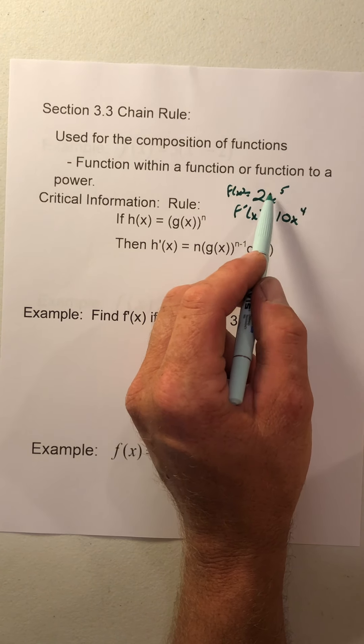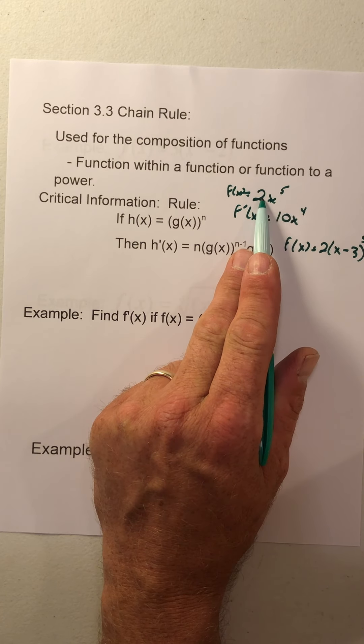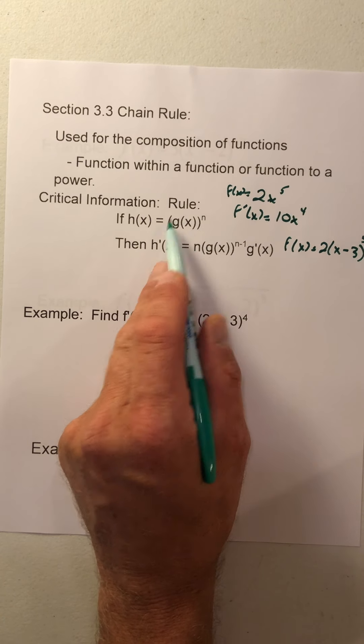Today we're looking at basic chain rule in which we have a function to an exponent. There are lots of different forms for the chain rule. Basically all of them are going to deal with something about a function. So if h(x) is a function to an exponent, we're going to find the derivative by taking the exponent and multiply it to the front just like we did in the power rule. So we multiply the exponent to the front. We bring the exponent to the front.